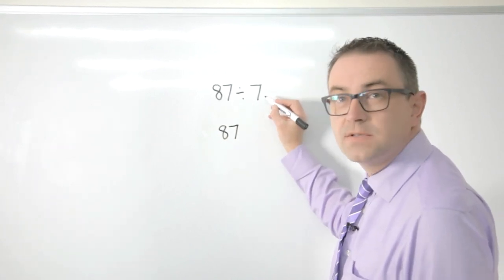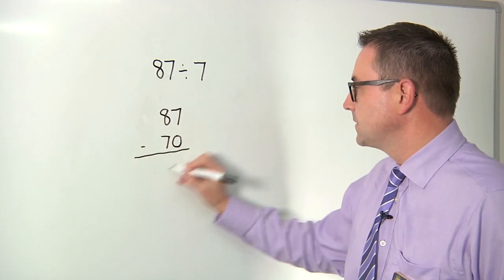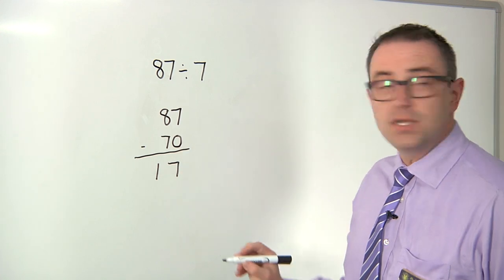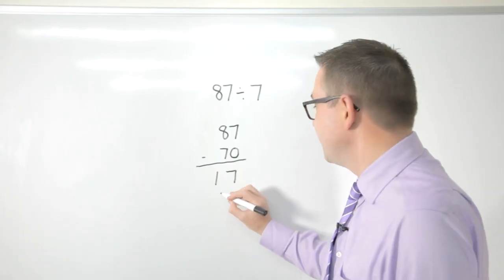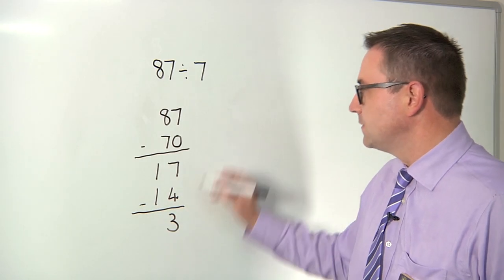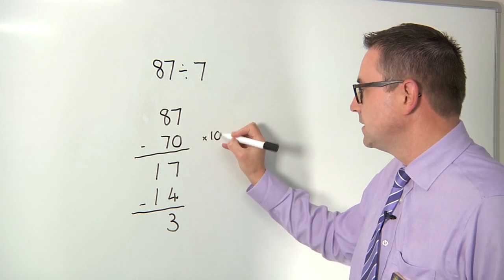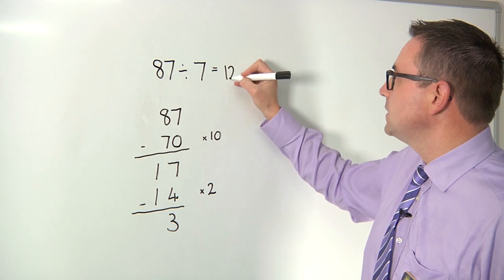Two sevens I know are 14, I'll take that off next, and that leaves me with a remainder of three. So I use 10 lots here and I use two lots here, so I have 12 lots of 7 fitting into 87, but I've got this remainder here of three.